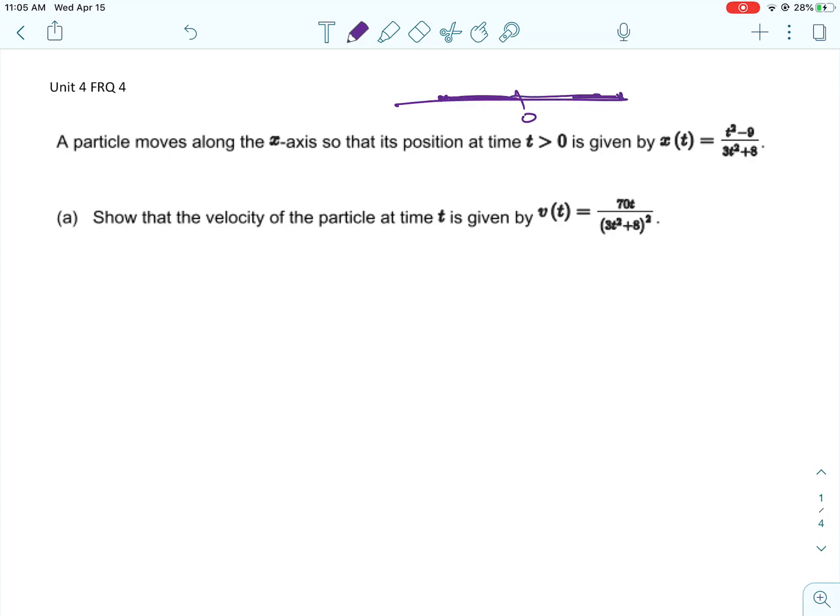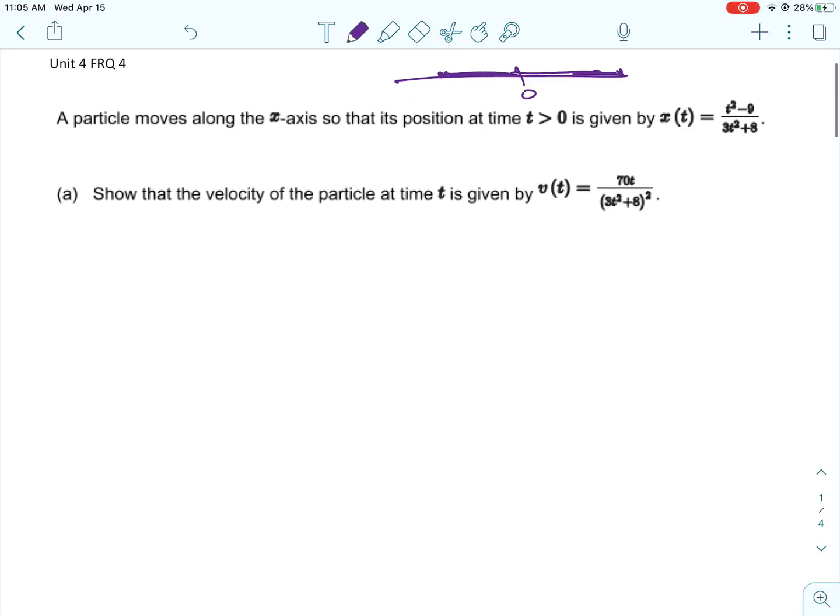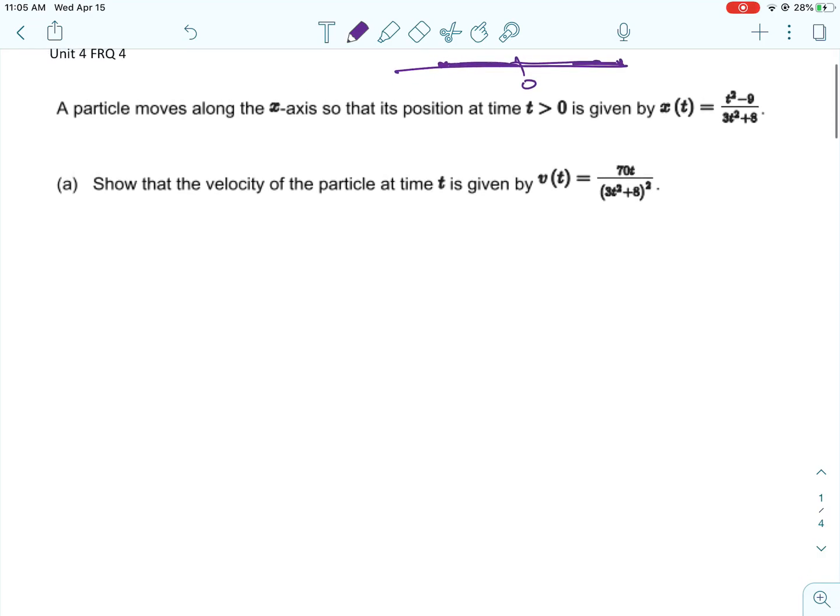x of t is the position function, and so it shows you the position on the x-axis. A negative value for x of t is going to be positioned on the left at that time, and a positive value is going to be the particle positioned on the right.